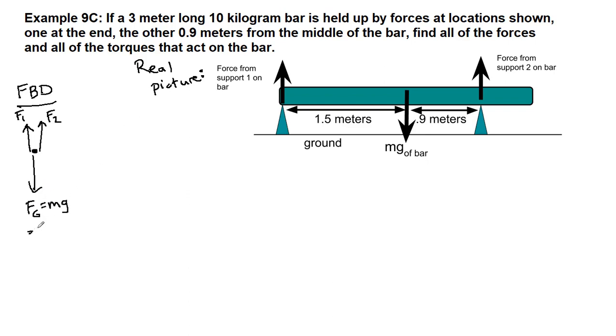And the weight of the bar Fg is mass times little g, and it's a 10 kilogram bar, so 10 times 9.8 is 98 newtons. And so that free body diagram has all the information about forces in it already.